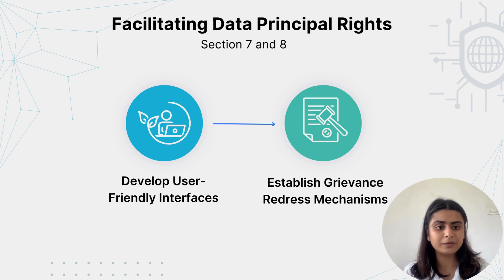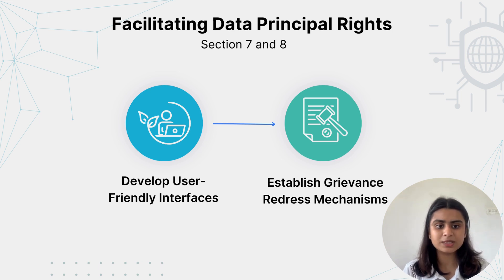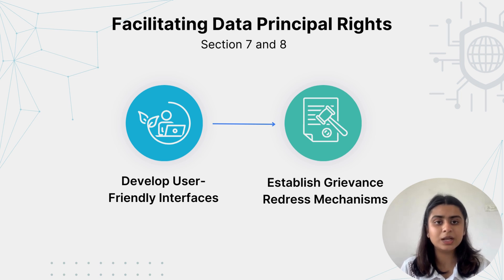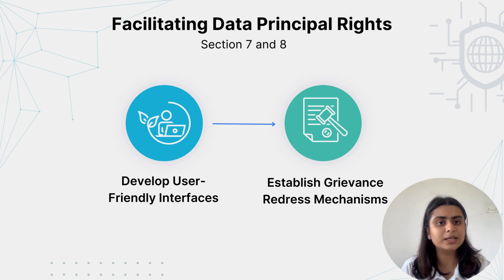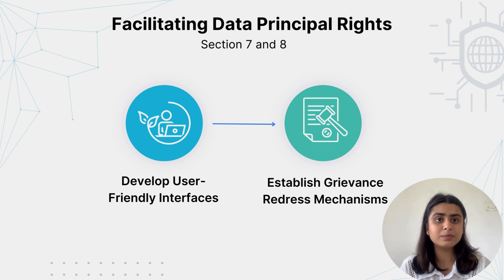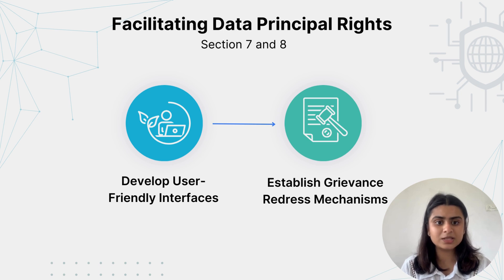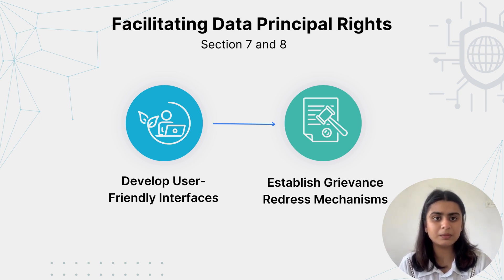Section 7 and Section 8 — here we allow individuals to access and manage their data and establish effective grievance mechanisms. Action steps would be: first, have user-friendly interfaces — develop easy-to-use platforms for individuals to manage their data preferences. For example, Netflix allows users to manage their viewing preferences and data collection settings through a clear interface. Second, establish grievance mechanisms with clear procedures for addressing data-related complaints. For example, a telecom company like Airtel provides multiple channels such as a customer care number, a self-service app, and web-based support, with clear timelines for resolution and escalation.